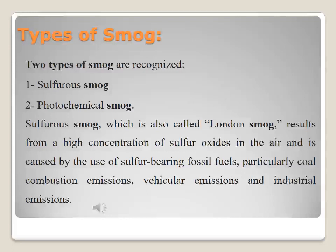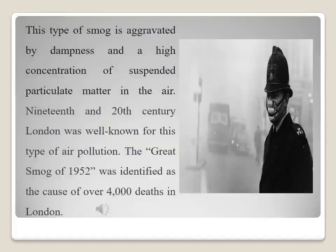At least two distinct types of smog are recognized: sulfurous smog and photochemical smog. Sulfurous smog, also called London smog, results from high concentrations of sulfur oxides in the air and is caused by the use of sulfur-bearing fossil fuels, particularly through coal combustion, vehicular, and industrial emissions. This type of smog is aggravated by dampness and high concentrations of suspended particulate matter in the air. 19th and 20th century London was particularly well known for this type of air pollution.